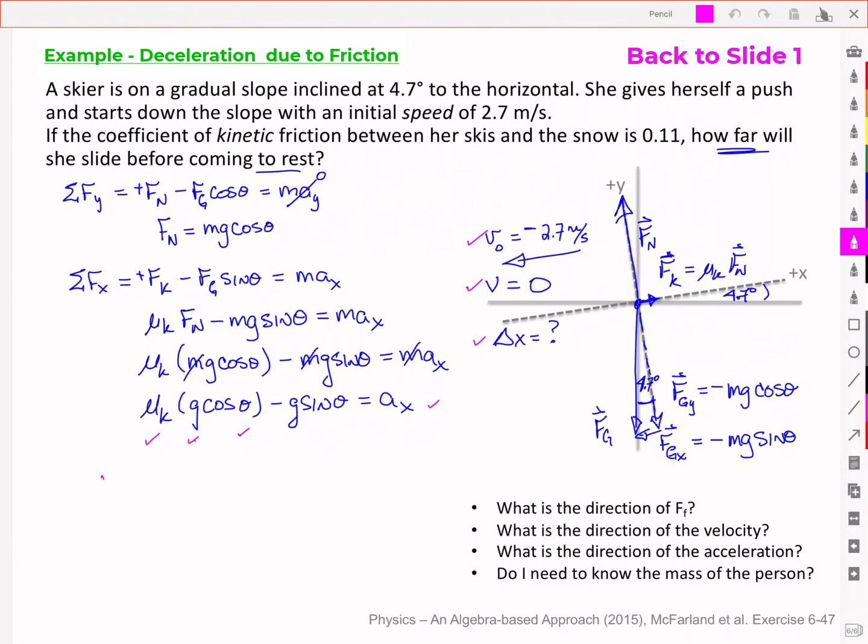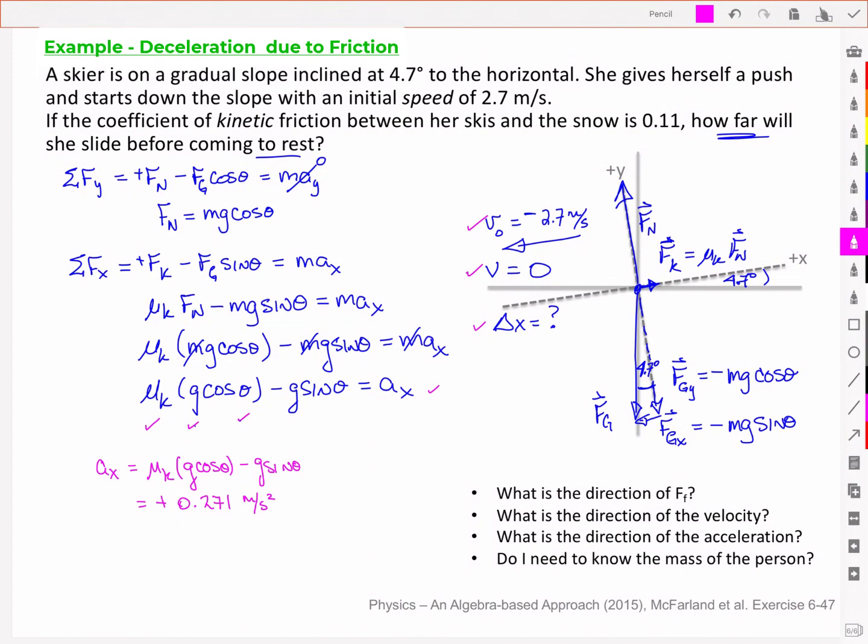And so if you noticed when I worked out the acceleration, this comes out to be a positive value. Why was it a positive value when I was moving in the negative direction? Well, my velocity was negative because I was moving in that direction. So the net force was in this direction because the kinetic friction was actually greater than this force or this component of the gravity.